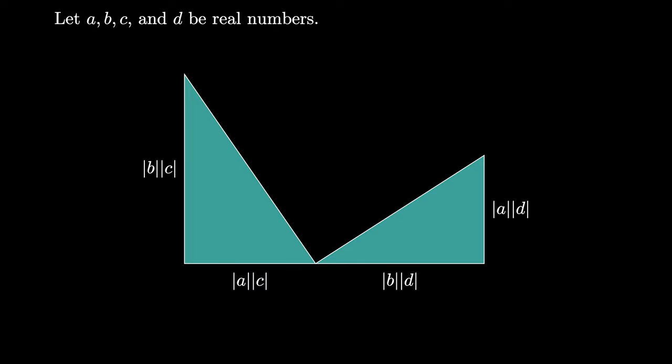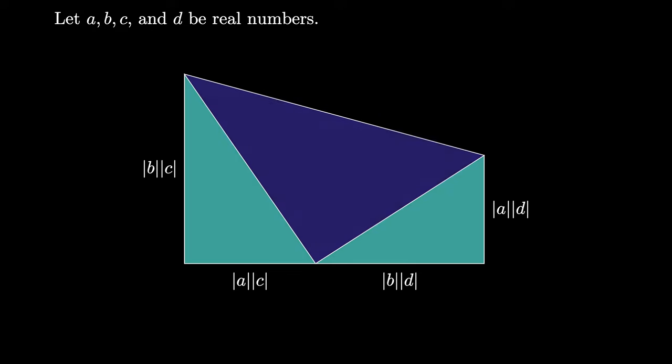Because this new triangle is a scaled and rotated copy of the original right triangle, when the two triangles are placed side by side like this, they produce a right angle so that this pictured triangle is a right triangle as well.